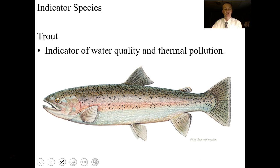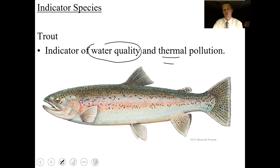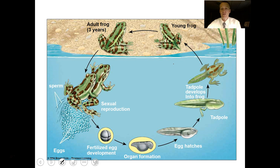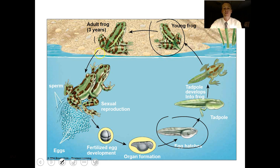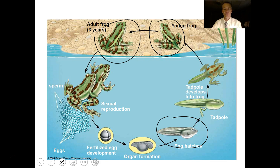Trout are an indicator species — they indicate water quality and temperature. Trout need very cold, very clean water; if a stream is too warm or polluted, you won't find trout. Frogs are also indicator species — they spend part of their life as aquatic tadpoles and part as terrestrial adults, so they indicate both water and air pollution. Where water or land is severely polluted, you won't find frogs.